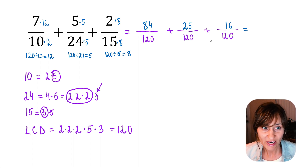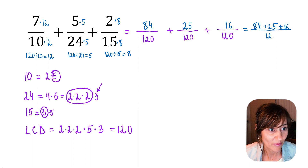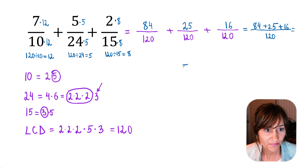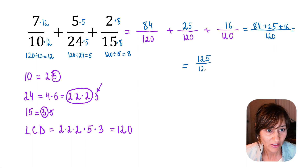Now, to add fractions with the same denominator, you add the numerators together: 84 plus 25 plus 16, and keep the denominator the same — 120. So 84 plus 25 plus 16 is 125 over 120.